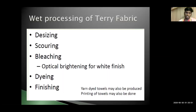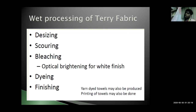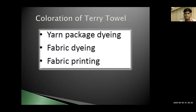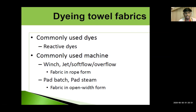The wet process of terry fabric includes: de-sizing, scouring, bleaching, dyeing, and finishing. We won't talk much about this but I would like to name these processes. The yarn-dyed towels may also be produced, and printing of towels may also be done. The printing is a very good idea as many customers would like to buy your towel seeing your patterns and designs. Coloration of terry towel involves yarn package dyeing, fabric dyeing, and fabric printing. Commonly used dyes are reactive dyes. Commonly used machines include winch, jet, soft flow, and overflow; also pad batch, pad steam, and fabric in open-width form.